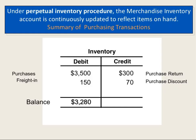Under the perpetual inventory system, there is one account — inventory or merchandise inventory. Every time I buy, I debit it; any time goods are returned, I credit it; for a discount, I credit it; for freight in, I debit it; and when I sell, I credit it. Most businesses use this method, as it is simpler. However, many of the journal entries we will be using in practice are for the periodic inventory system.